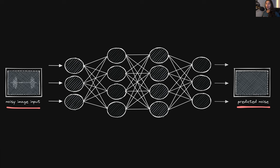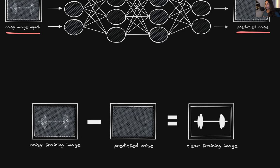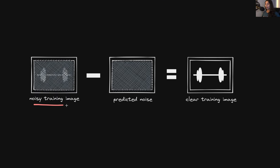Once the network has been trained to accurately predict the noise in the training data, we can just subtract the predicted noise from the original input image to get the clear input image hidden underneath all of the noise. We can see that depicted here — we have our noisy training image, and once the model can accurately give us the noise present in it, we subtract that noise from the training image to get the clear training image with no noise.